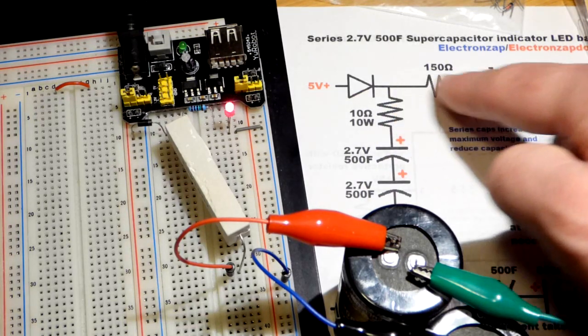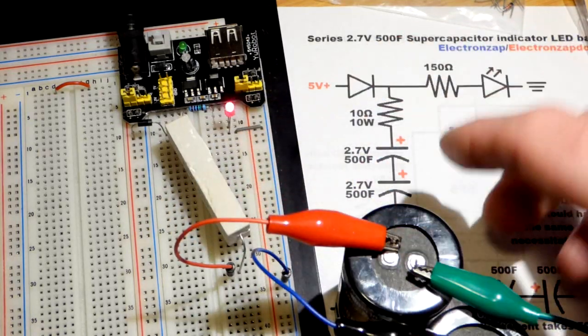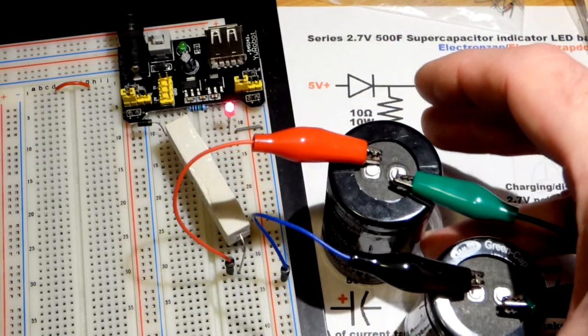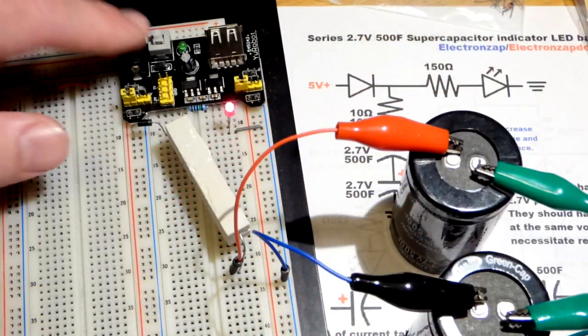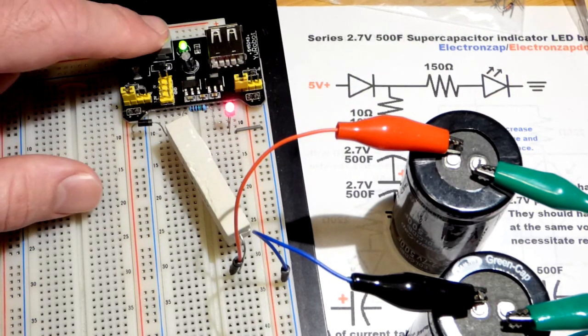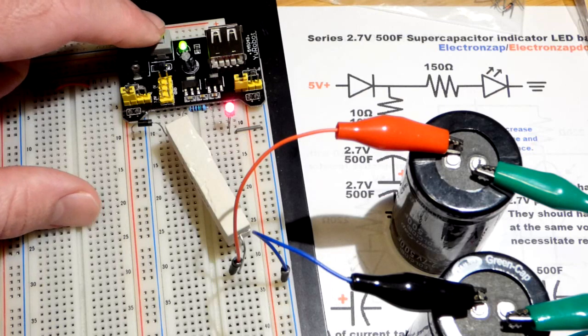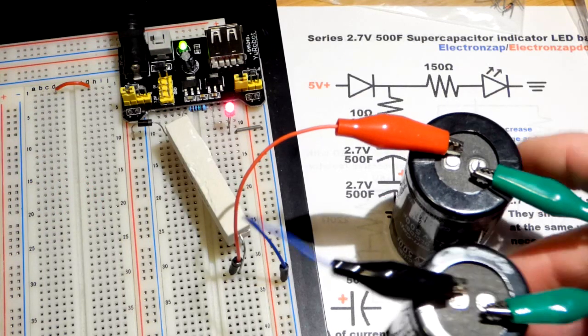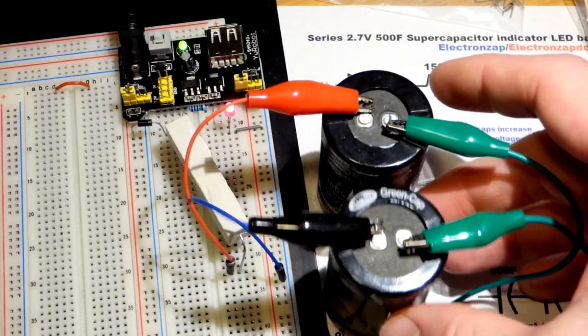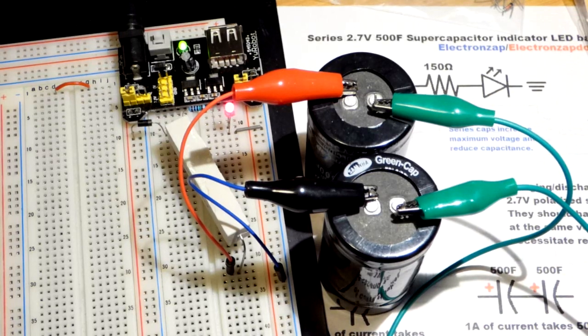So the current's going through this resistor which is only a 10 ohm resistor, so it's not really limiting the current. Mostly this 150 ohm resistor and the voltage drop of the LED is limiting the current, so they're discharging right now. When we hit the power supply, the LED got a little bit brighter, now it's a little bit dimmer, but now both the LED is being powered and the supercapacitors are being charged.